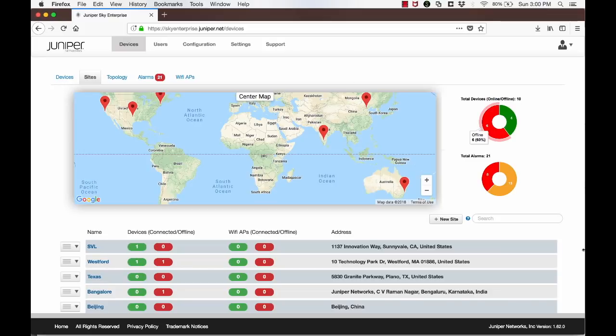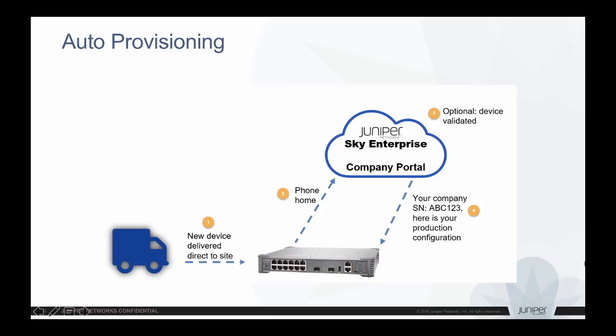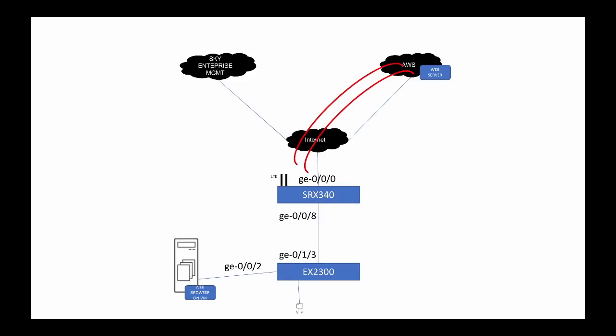In this video, we will see a short demo of Juniper Sky Enterprise. The demo will show how to onboard and manage branch office network devices like SRX secure routers and EX switches. The first step in deploying a remote branch office is to onboard the devices. In this demo, we will show how to onboard an SRX device without the need for a certified network engineer on site.